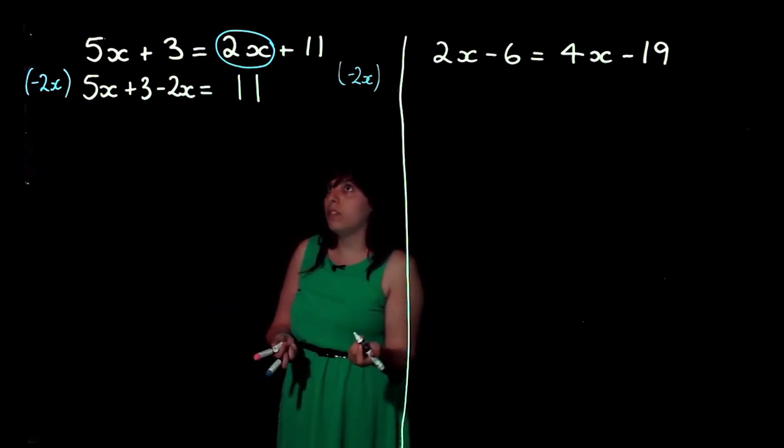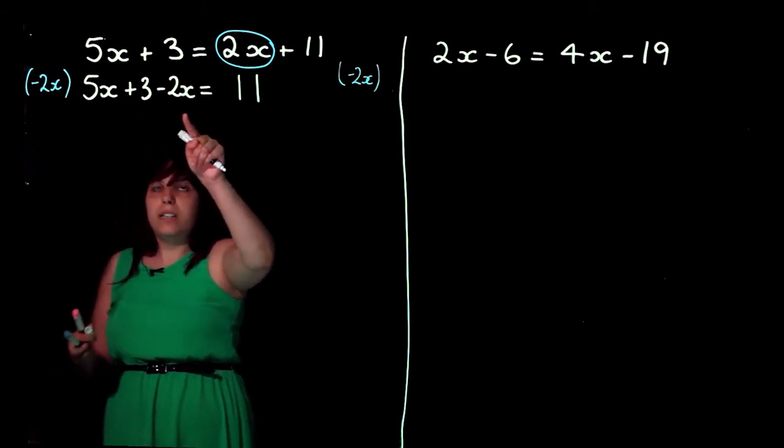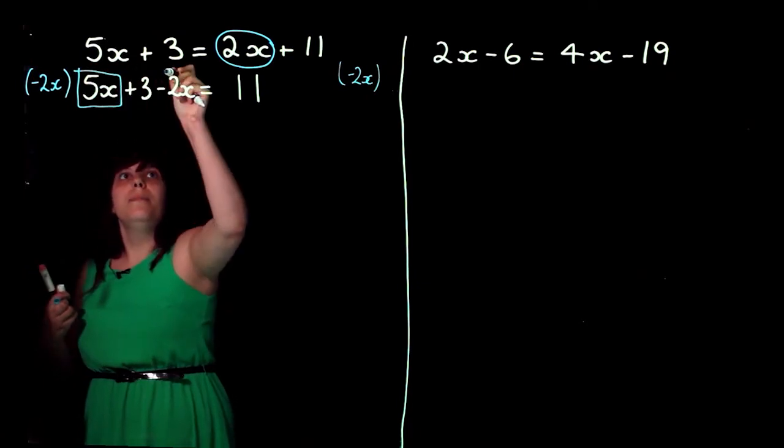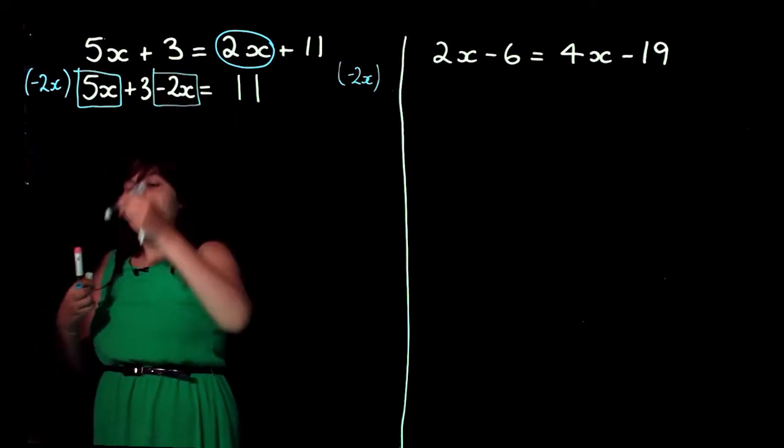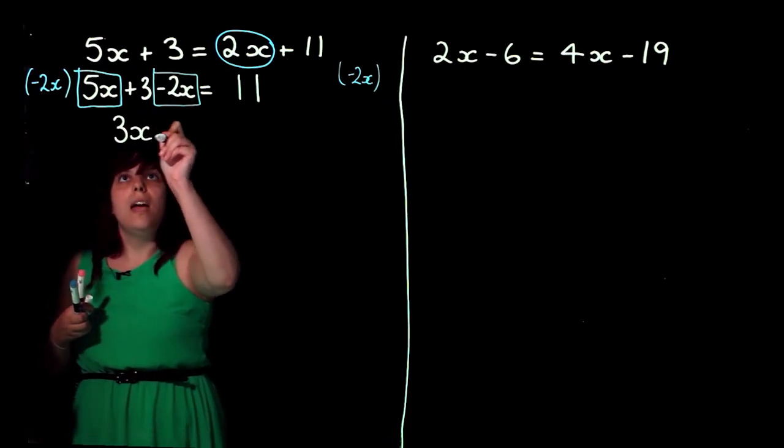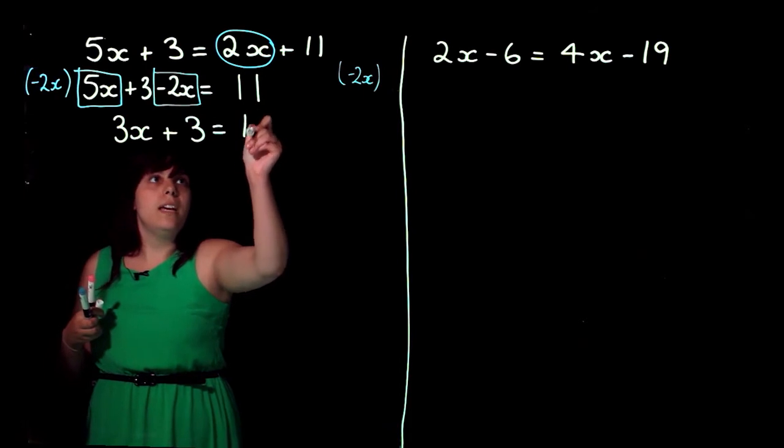So, if I go back to this side, I've got 5x and a minus 2x, and they are common. So, 5x minus 2x is going to give me 3x. And then, I've got my plus 3 there, and that equals 11.